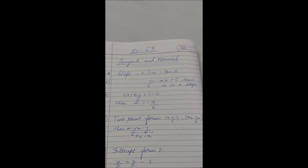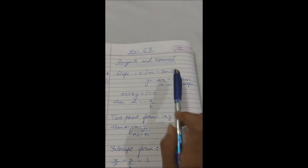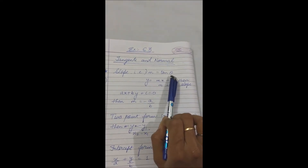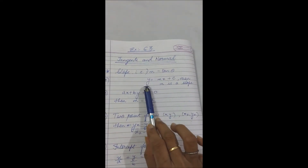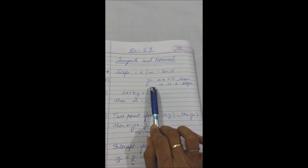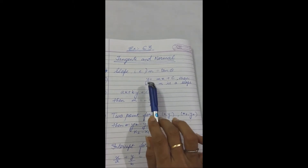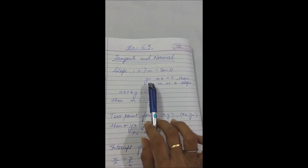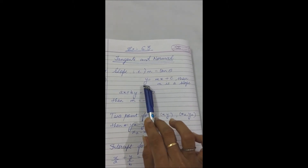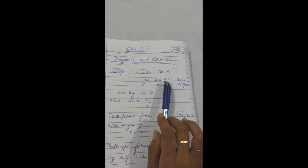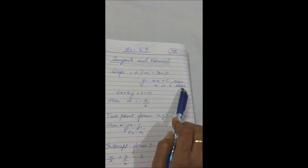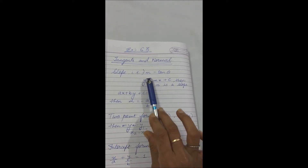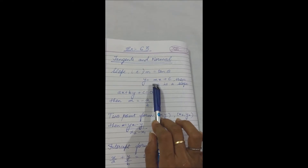First formula was m equal to tan theta, where theta or angle will be given. Second one was slope intercept form: y = mx + c, where m is the slope. Mind well, m is denoted for slope.